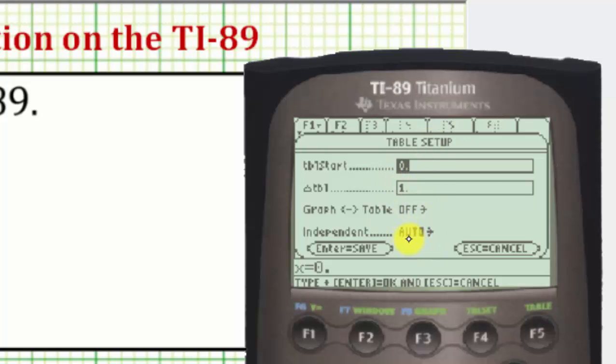Notice here toward the bottom it says automatic. In automatic mode, we can scroll up and down the table to view X values and their corresponding Y values.